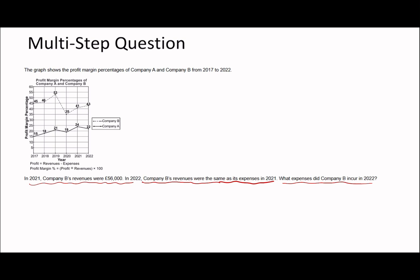Importantly, I'd probably read the abstract here. It says the graph shows the profit margin percentage of company A and B from 2017 to 2022. The graph has the profit margin percentage, so it's probably going to be quite useful. This asks about expenses that company B incurred. So profit margin percentage equals profit divided by revenue times 100, where profit equals revenue minus expenses.